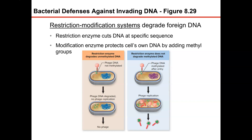Bacteria also defend themselves against their own pathogens — they have their own immune system, primarily to fight off bacteriophages that would kill them. The first mechanism they use is restriction enzymes. A restriction enzyme is an enzyme that cuts DNA at specific sequences. We use restriction enzymes a lot in biotechnology, but the original reason for them was to cut incoming DNA.